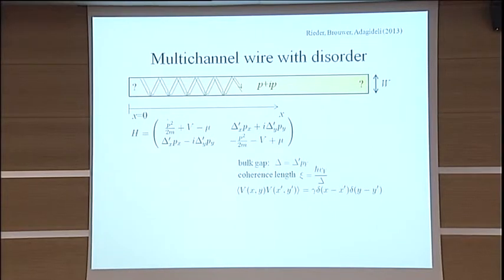So then what happens to this scenario if you add disorder? And so we have the same Hamiltonian now, the P plus IP model, with again a random potential in there, which is Gaussian white noise. And before telling you how we get to this answer, I would like to tell you what the result is, because I think it's actually very fascinating.